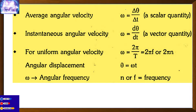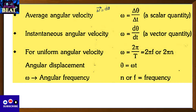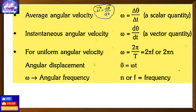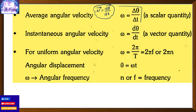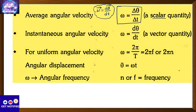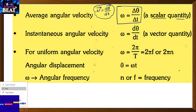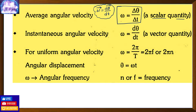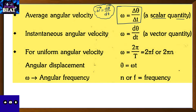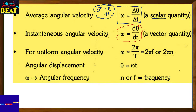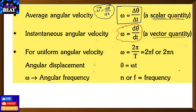Angular velocity is the rate of change of angular displacement. Instantaneous angular velocity is dθ/dt — this is a vector quantity. Average angular velocity is net angular displacement divided by total time — this is a scalar quantity. So remember: average angular velocity is scalar, while instantaneous angular velocity is a vector quantity.